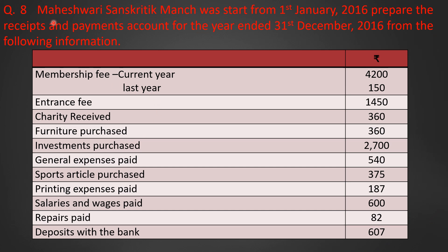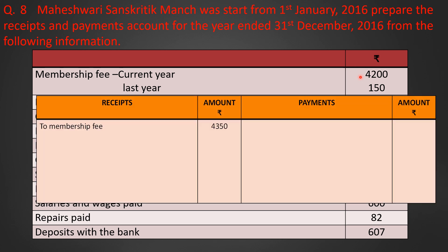Question 8: Maheshwari Sanskritic Munch was started from 1st January 2016. Prepare the receipt and payment account for the year ended 31st December 2016, from the following information. Membership fee: current year Rs. 4,200 and last year Rs. 150. Both years total membership fee Rs. 4,350 is to be shown on the receipt side.